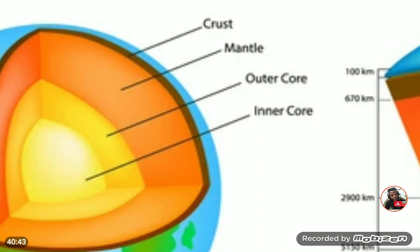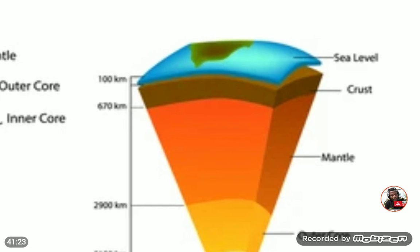In upcoming lessons we will look at how the crust is further divided into sections like jigsaw puzzle pieces fitting together to form the outer shell of rocks — what are called plates of the world. The dividing boundary between the crust and the mantle is called the Moho — M-O-H-O — short for the Mohorovičić Discontinuity, named after the scientist who discovered it.